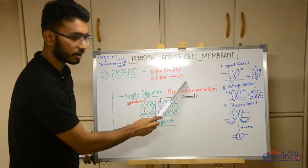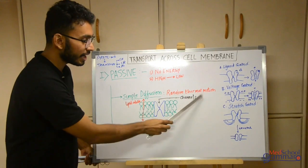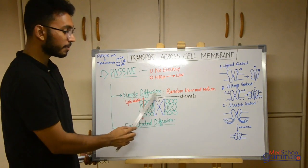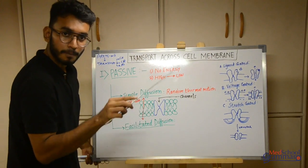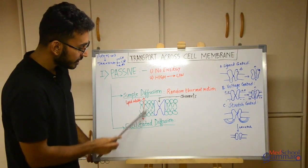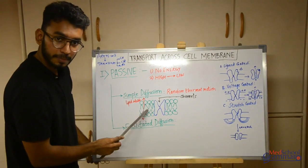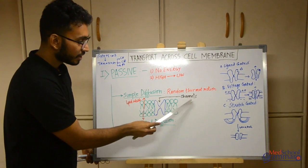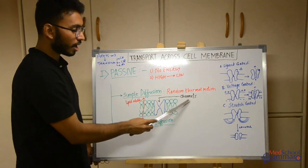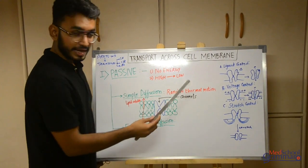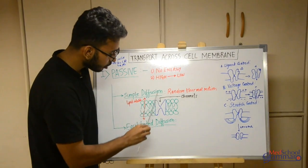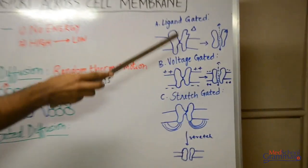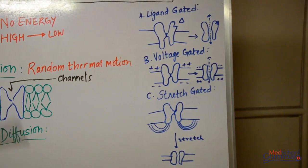Coming back to simple diffusion — it is due to random thermal motion, due to vibration of molecules. The thermal energy present causes random motion of molecules. In physiology, simple diffusion means passage through the cell membrane — either through the lipid bilayer or through proteins acting as channels. Now, these channels are of three types based on gating. Gating means there are gates or structures which keep channels closed when no substance is present, and when the substance arrives, these gates open and allow the substance to pass.